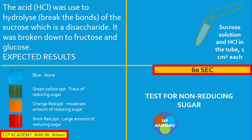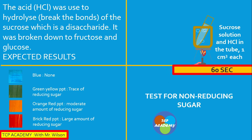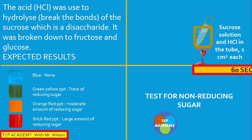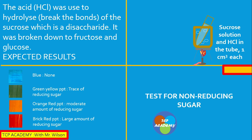We continue the experiment by applying heat for about 60 seconds — one minute — with the mixture of sucrose and hydrochloric acid. Our intent is to break the bonds in this disaccharide and reduce it to the monosaccharide state, so we can then test for reducing sugar. We are working with sucrose (table sugar) to confirm it contains reducing sugar once its bonds are broken.